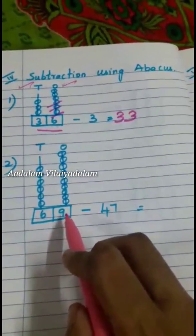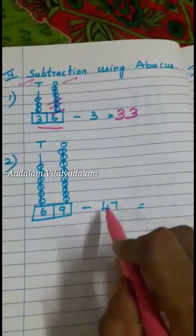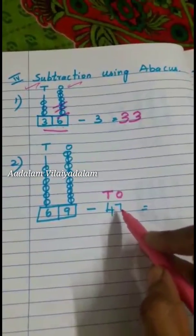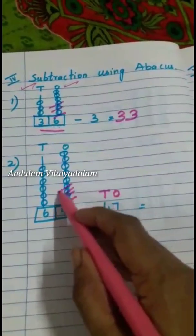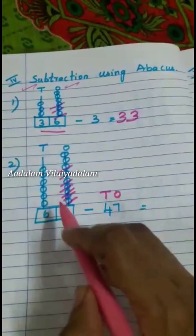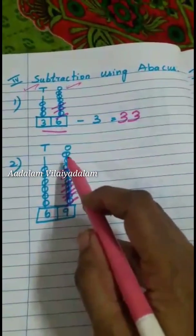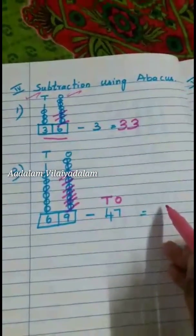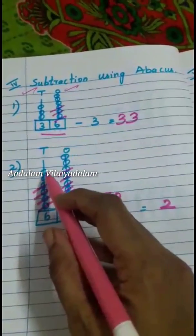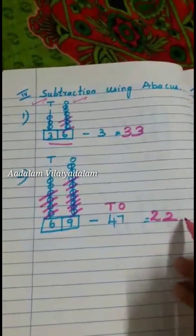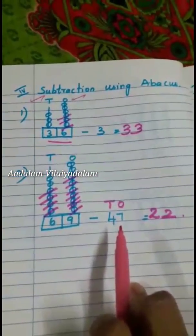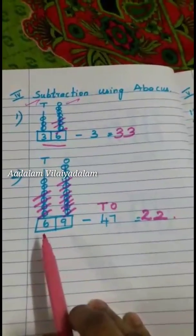Next: what is 69 minus 47? This is the 1's place and this is the 10's place. First you have to minus in the 1's place — minus 7: 1, 2, 3, 4, 5, 6, 7. How much is left? 9 minus 7 — the balance is 2. Now in the 10's place, minus 4: 1, 2, 3, 4. The left is 2. So the answer is 22. Remember: if a single digit is given, minus only in the 1's place; if a double digit is given, minus in both the 1's place and the 10's place.